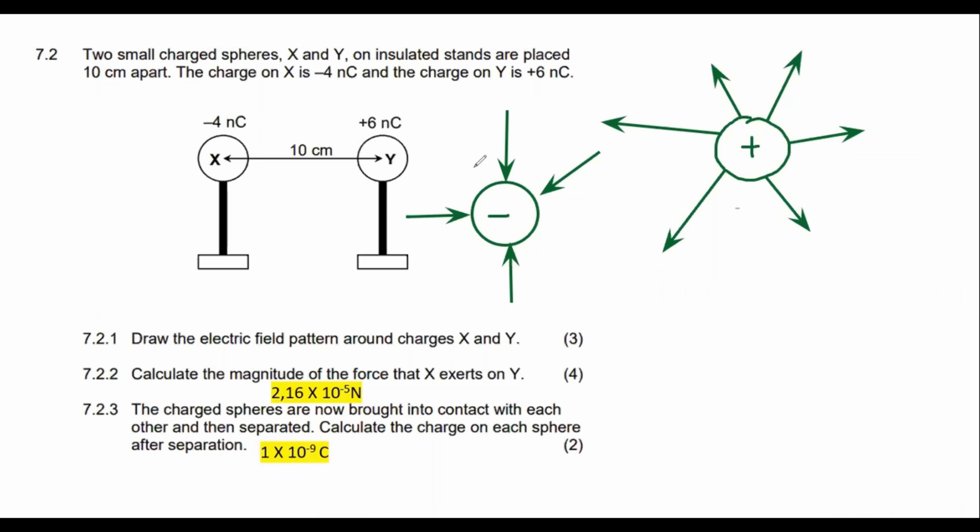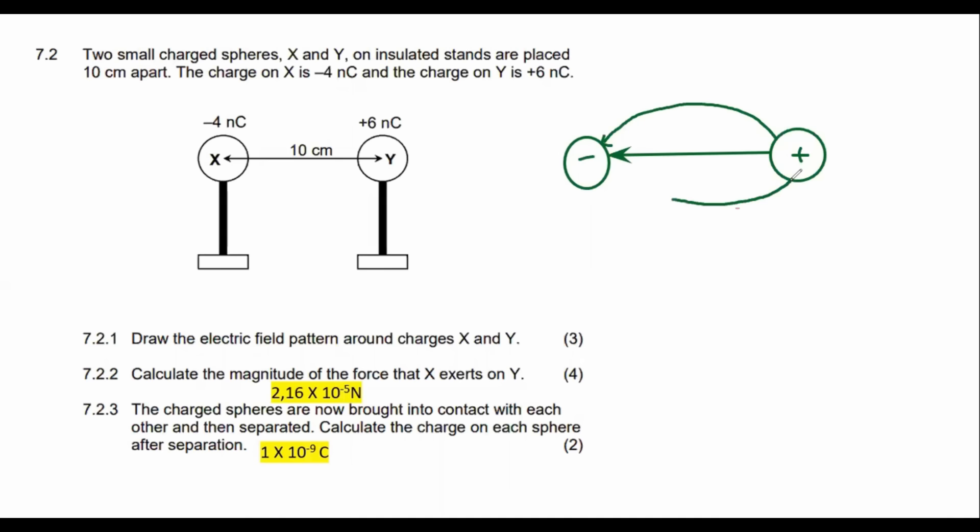So when they ask us to draw the electric field pattern between a negative charge and a positive charge, we draw two circles. We put the negative one there and the positive one there. Then we draw the arrow going from the positive to the negative, something like that, because electricity always flows out of the positive and towards the negative.